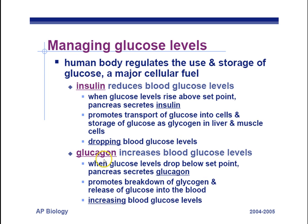Glucagon is the opposite of insulin, and you have to know both. Glucagon increases blood glucose levels. When glucose drops too low, you secrete glucagon from your pancreas, and this glucagon promotes the breakdown of glycogen, releases the glucose into the blood, and you increase blood glucose levels.